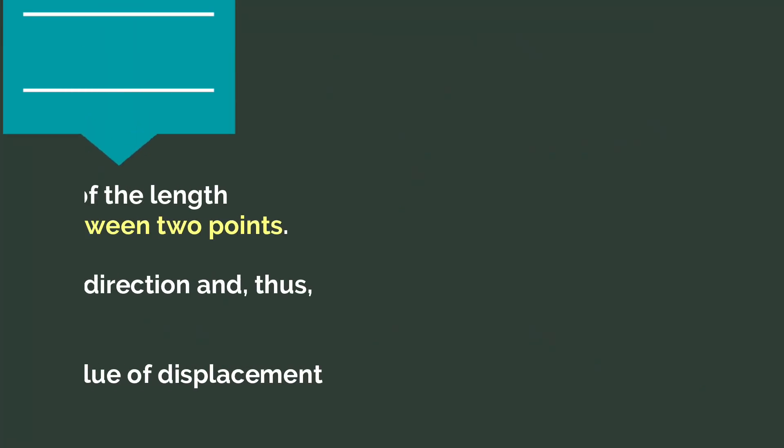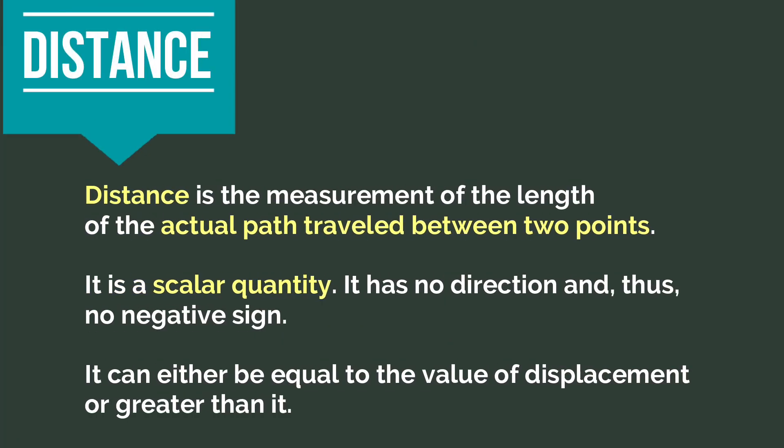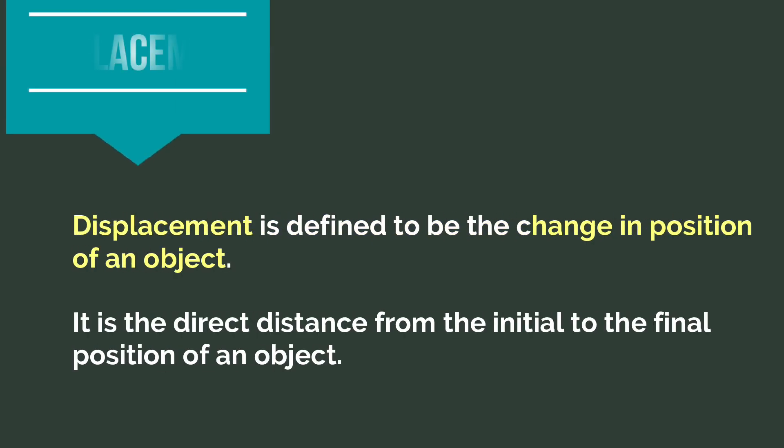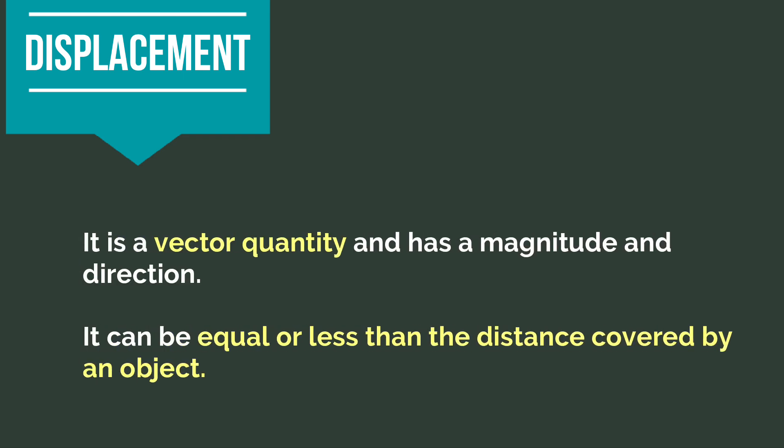To summarize: distance is the measurement of the length of the actual path traveled between two points. Distance is a scalar quantity — it has no direction and thus no negative sign, and it can either be equal to or greater than the value of displacement. Displacement is defined as the change in position of an object — the direct distance from the initial to the final position. It is a vector quantity with both magnitude and direction, and the displacement can be equal to or less than the distance covered by an object.